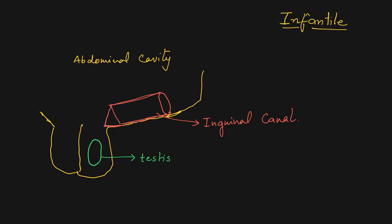If the processus vaginalis remains patent only up to the level of the inguinal canal — that is, somewhere between the deep inguinal ring and the superficial inguinal ring — we call it the infantile type of indirect inguinal hernia.